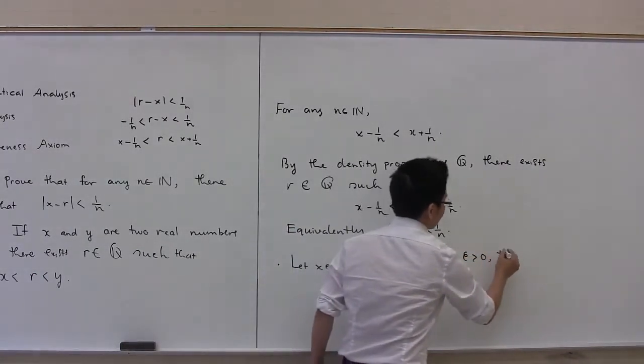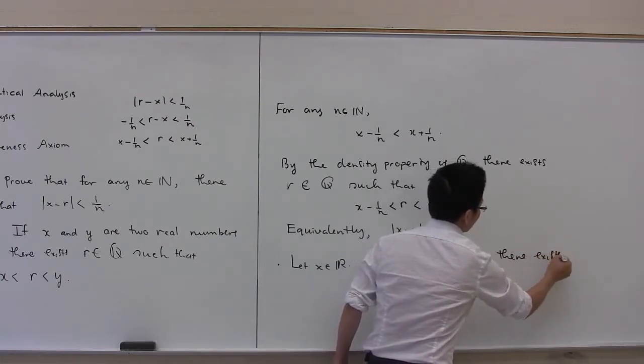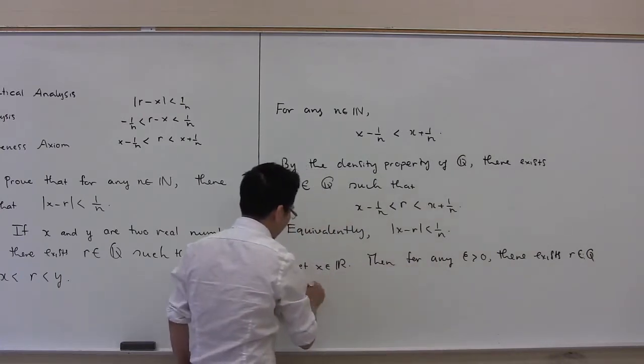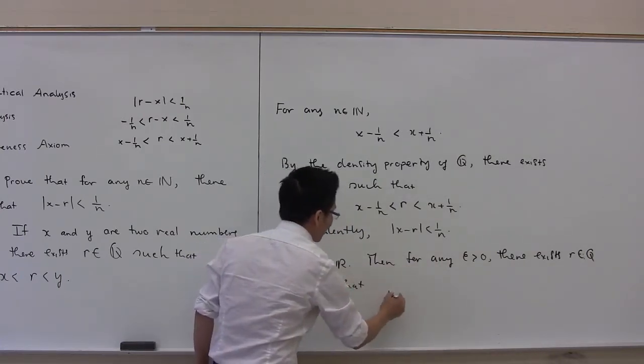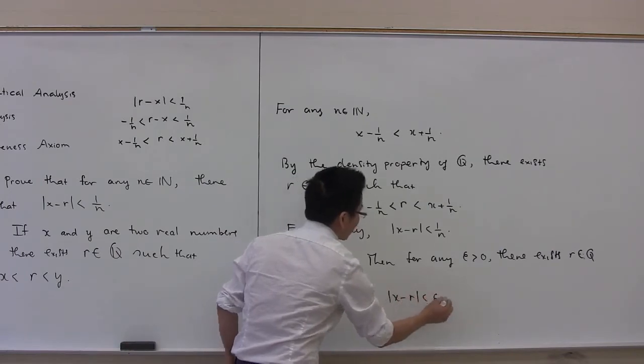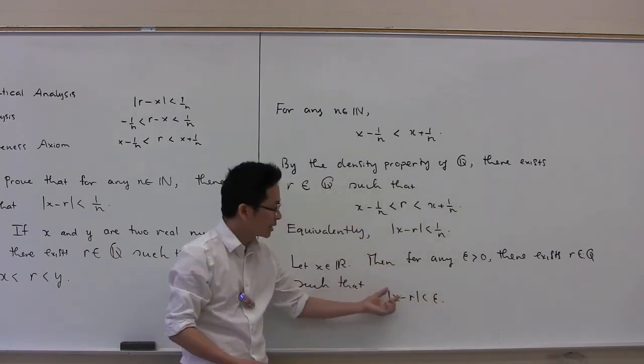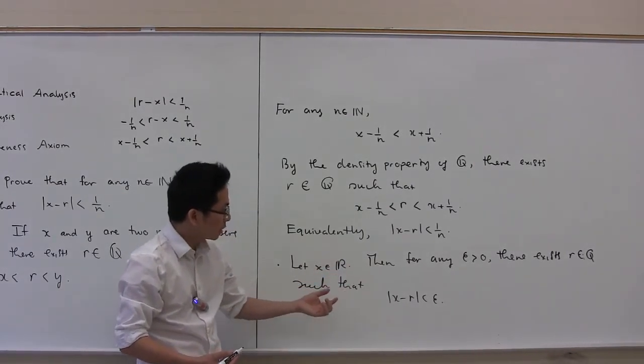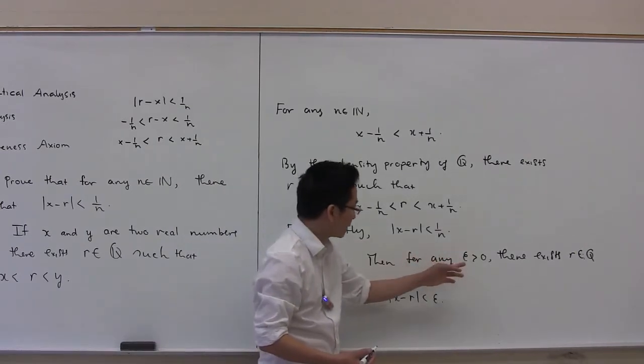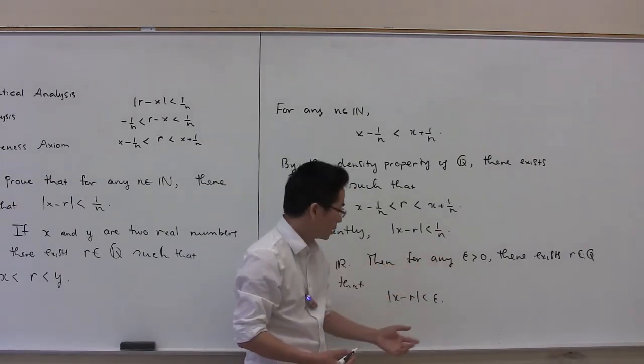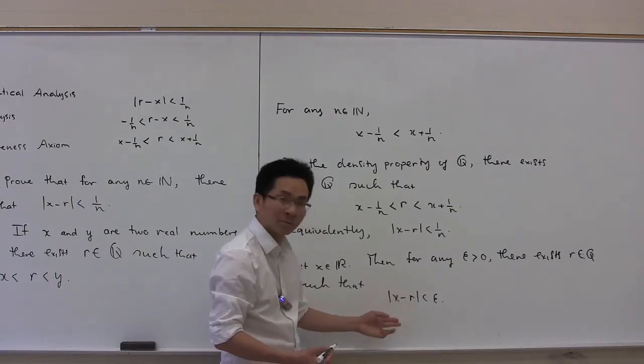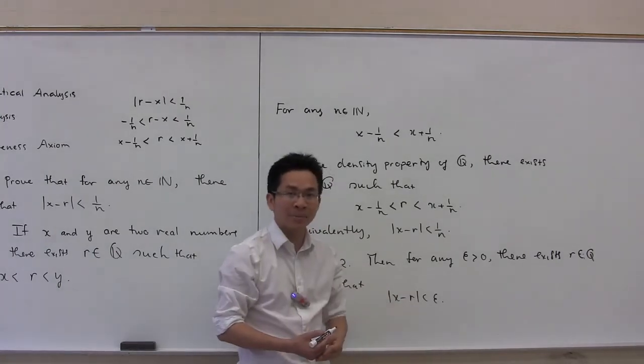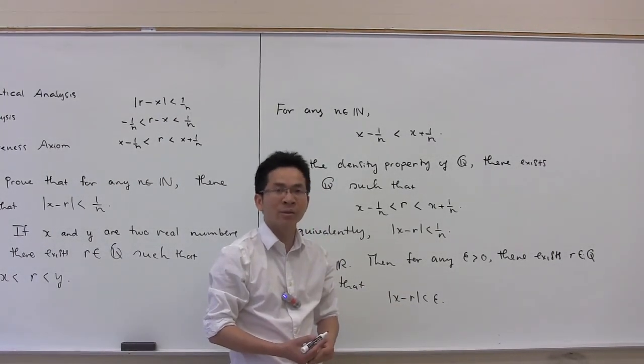there exists r in Q such that the absolute value of x minus r is less than epsilon. We can prove this property in a very similar way. And this property means that given any real number and epsilon greater than zero, we can approximate x by a rational number such that the absolute value of x minus r is less than epsilon. And this is a very useful property.